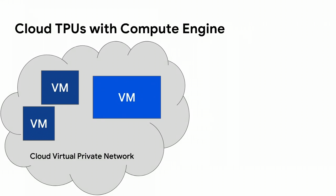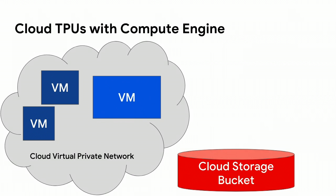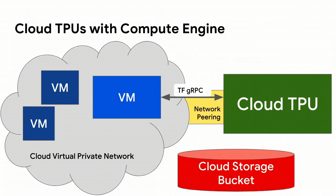From a cloud platform perspective, if you have a bunch of Compute Engine VMs running in your private network with data stored in Google Cloud Storage, when you allocate a Cloud TPU you get the dedicated Cloud TPU host and TPU device. We open up a network peering channel, and once that's open you can connect to it from your GCE VMs over TensorFlow's open-source gRPC protocol. You can have multiple VMs talking to one Cloud TPU or one VM controlling multiple Cloud TPUs.